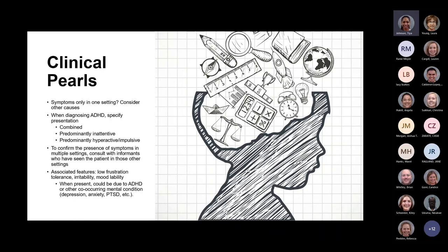There are several associated features with ADHD that may include low frustration tolerance, irritability, or mood lability. When these symptoms are present, this could be due to ADHD alone or a concurrent mental condition such as depression, anxiety, or PTSD. You have to ask questions to tease out the cause, because in order to adequately treat the symptoms, you need to make sure you are treating the right thing. If you treat ADHD and those symptoms don't improve, maybe it's due to a co-occurring mental condition.